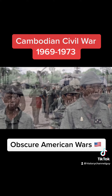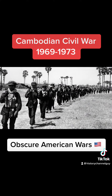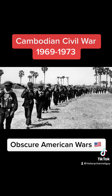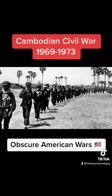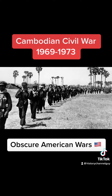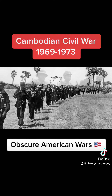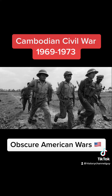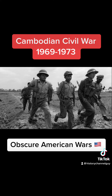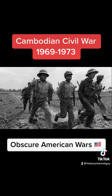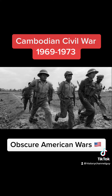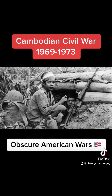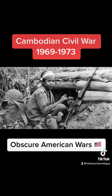This was part of a larger U.S. strategy in the Vietnam War aimed at disrupting enemy supply lines and reducing their ability to launch attacks against U.S. and South Vietnamese forces in Vietnam. In addition to the bombing campaign, the U.S. also provided military aid and support to the Cambodian government, including training and equipment for the Cambodian Army.